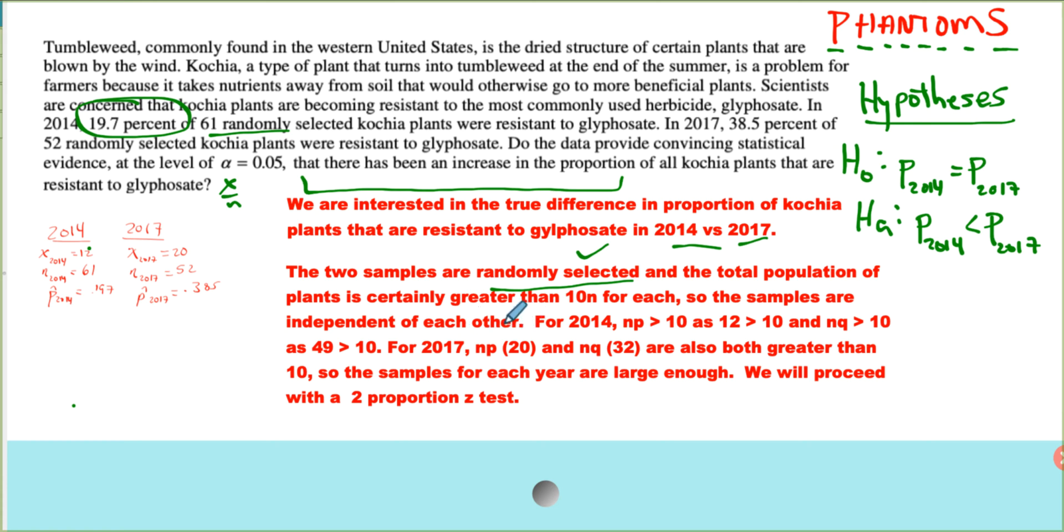The other condition is that the samples must be large enough. And so to check that, we use NP and NQ. They both have to be greater than 10 for each of the samples. So actually plug the numbers in. 12 is greater than 10, 49 is greater than 10, and 20 and 32 are also both greater than 10. By the way, some sources out there say they have to be greater than 5. It doesn't matter. As long as you pick one, then you're good to go. So the samples for each year are large enough.